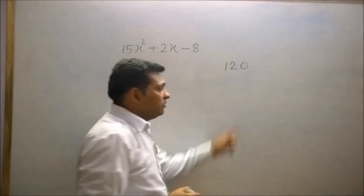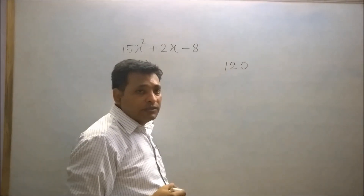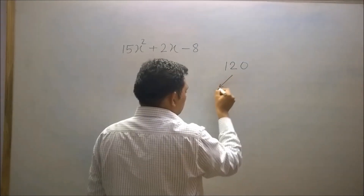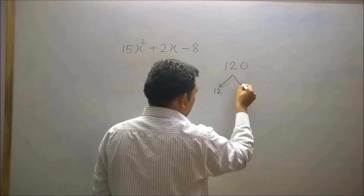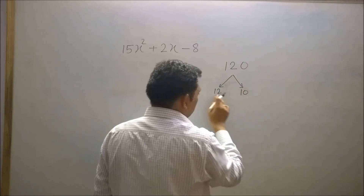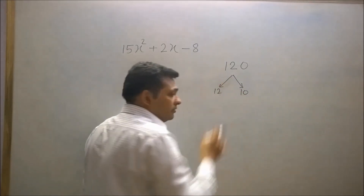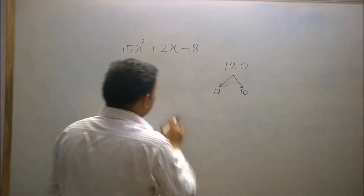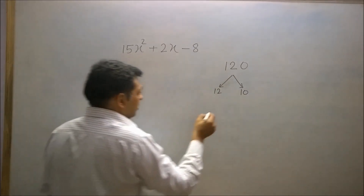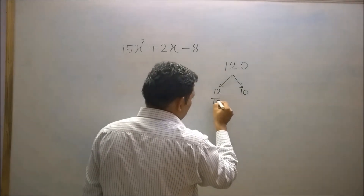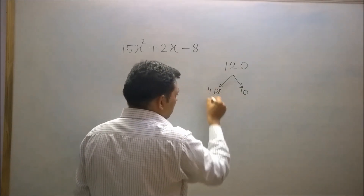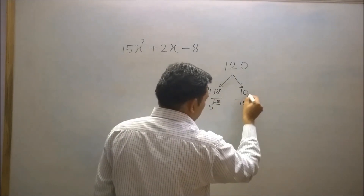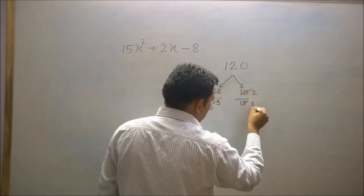Now break 120 into two numbers such that their difference is 2. One number is 12 and the other is 10, since 12 − 10 = 2. Now divide these numbers by the coefficient of x²: 12 ÷ 3 = 4, giving 4/5, and 10 ÷ 3 = giving 2/3.